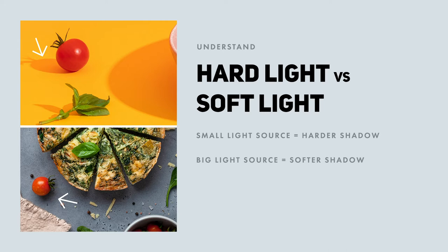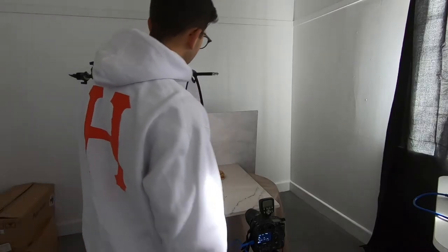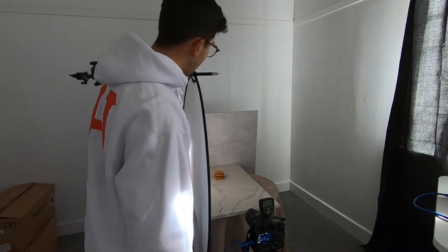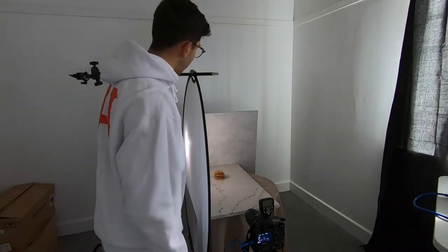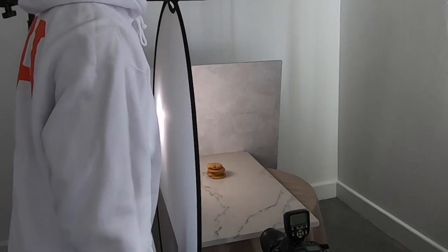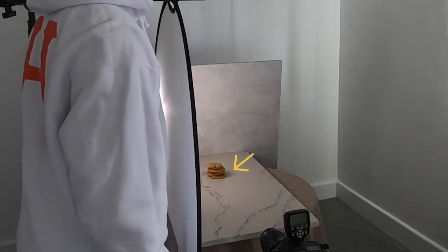Let me show you how the shadow softens when it hits the diffusion panel. Notice the size of the panel when the light from the iPhone hits the material — that panel is the new light source, and as you can see, it is creating a softer shadow.